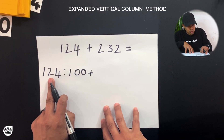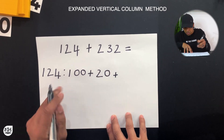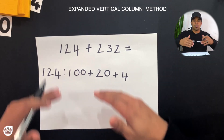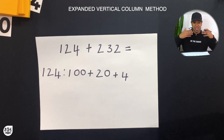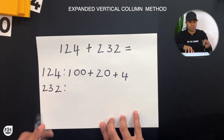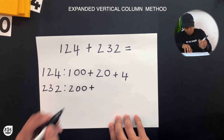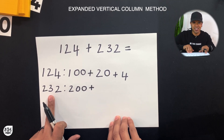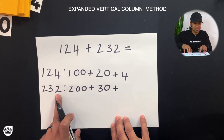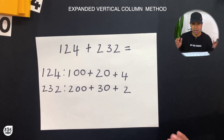We're going to expand 124 into its place values: the 1 is 100, plus the 2 is two tens which is 20, plus the 4 which is four ones. Now we're going to write down 232. The 2 is 200, plus the 3 is three tens which is 30, plus the 2 over here is two ones which is 2.